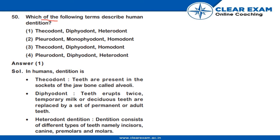The question is: which of the following terms describe human dentition? Options include: thacodont, diphyodont, heterodont, pleurodont, monophyodont, homodont; or thacodont, diphyodont, homodont, or pleurodont.